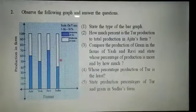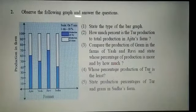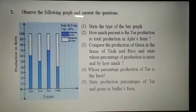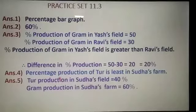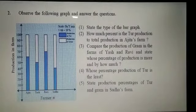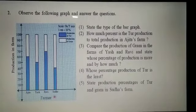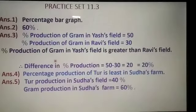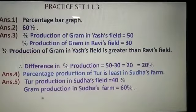Question 4: Whose percentage production of tur is the least? Tur is shown in blue color. Answer: The percentage production of tur is least in Sudha's farm. Question 5: State production percentages of tur and gram in Sudha's farm. Answer: Tur production in Sudha's field is 40% and gram production in Sudha's farm is 60%.